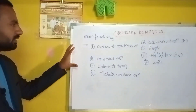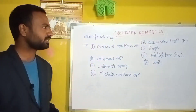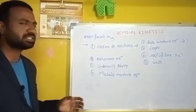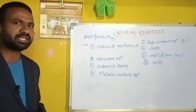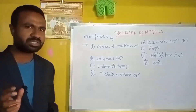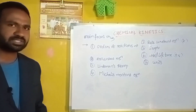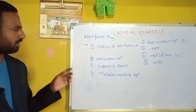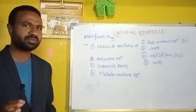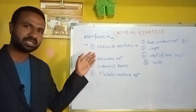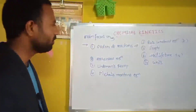The four key subtopics are: orders of the reaction (including rate constant equations, graphs, half-life, and units), Arrhenius equation, Lindemann's theory, and Michaelis-Menten's equation. These four are the most important. First, I need to explain basic terminology used in this topic.